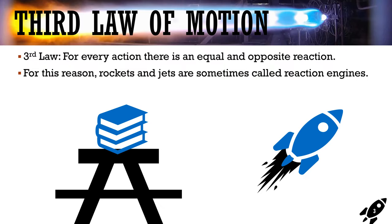To understand how a rocket is producing thrust, we're going to first look at Newton's third law of motion. This is the one that says for every action, there is an equal and opposite reaction — the force pairs law of motion. If you push on something, it pushes back.